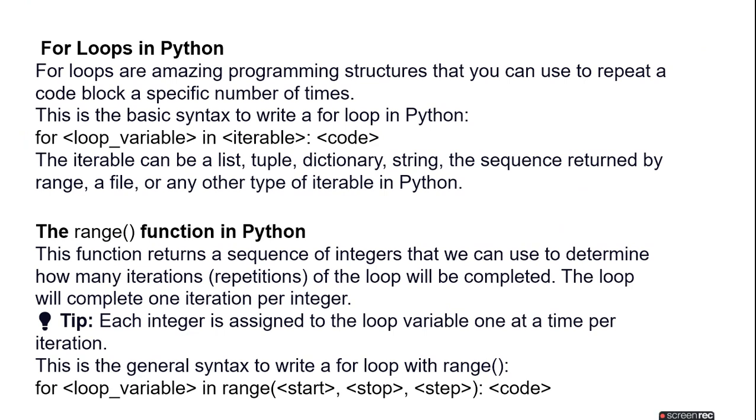For loops are amazing programming structures that you can use to repeat a code block a specific number of times. This is the basic syntax to write a for loop in Python: for loop_variable in iterable: code. The iterable can be a list, tuple, dictionary, string, the sequence returned by range, a file, or any other type of iterable in Python. So with the iterable option you can use a tuple, dictionary, string, and many more.